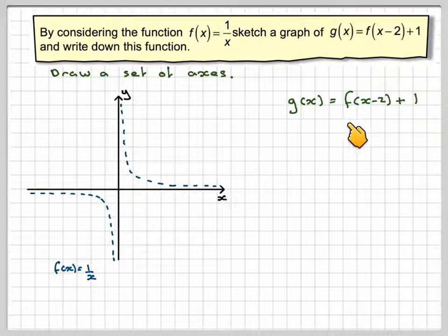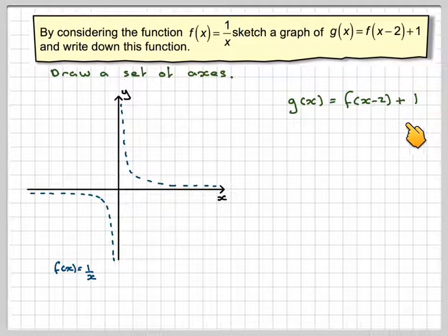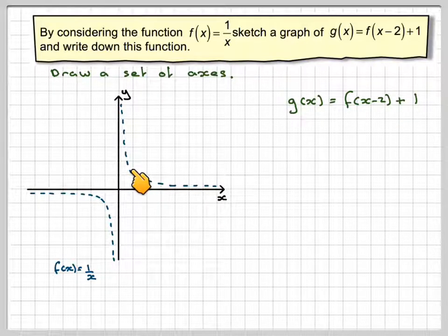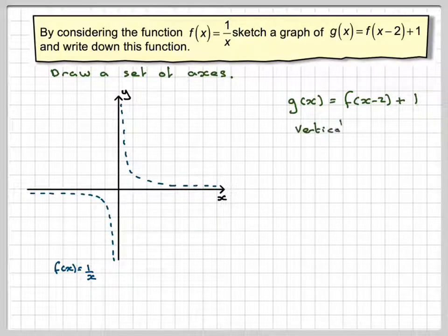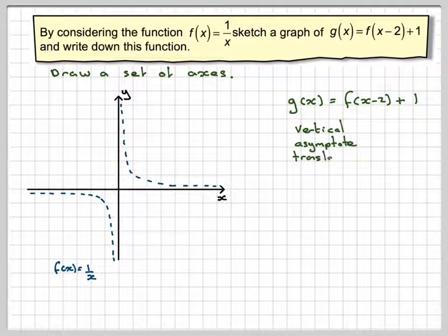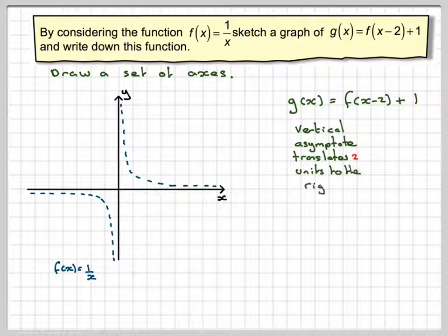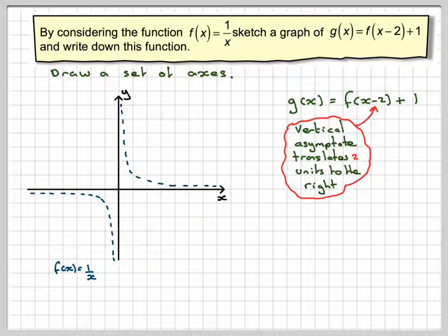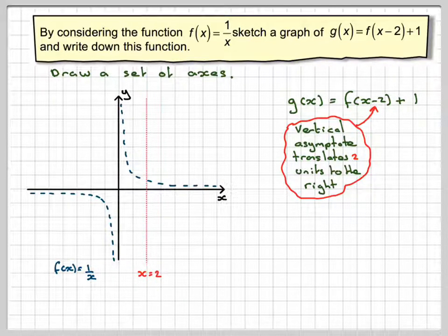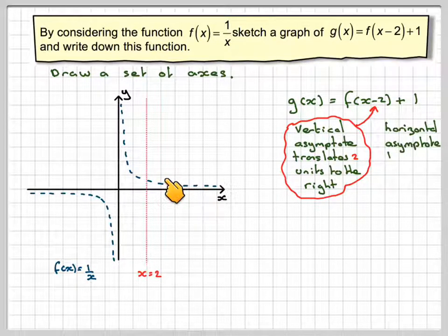So we've got g of x is equal to f of x minus 2 plus 1. So what does f of x minus 2 mean? It means all the coordinates are moved 2 units to the right. And the easiest thing to move first of all is the asymptote. So let's just move the asymptote 2 units to x is equal to 2. And then we've got the plus 1 on the end. What that does, it moves everything up by 1 unit.